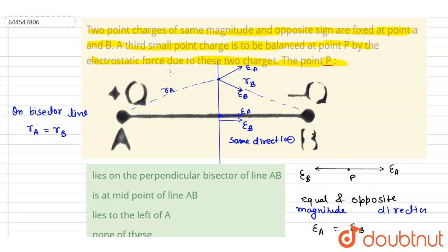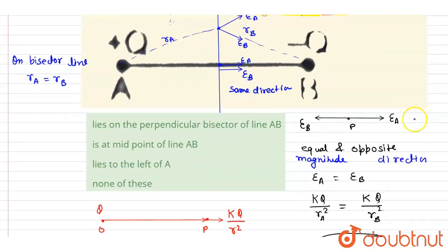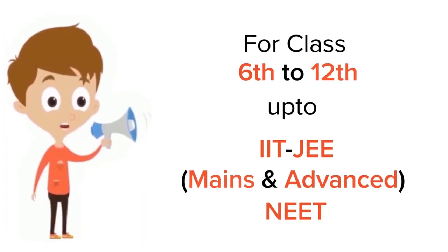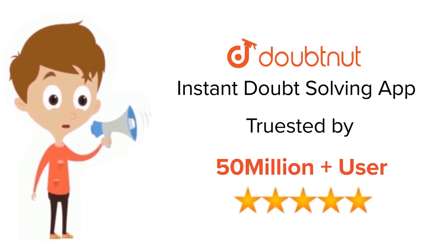So we cannot find any point where both conditions are satisfied simultaneously — equal magnitude and opposite direction. The condition for zero electric field at point P is not satisfied anywhere. Therefore, option D is the correct answer.